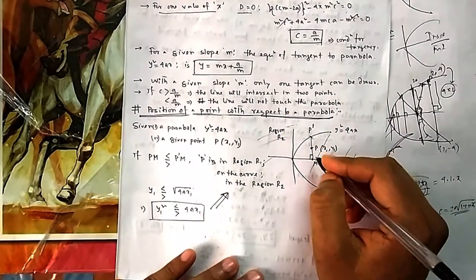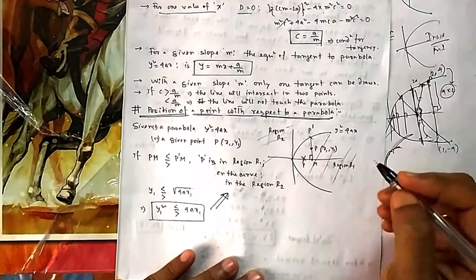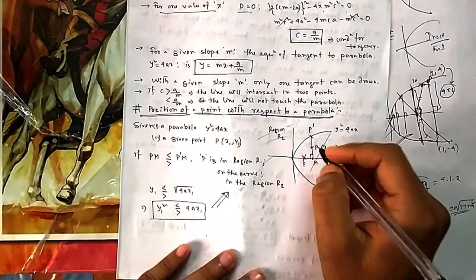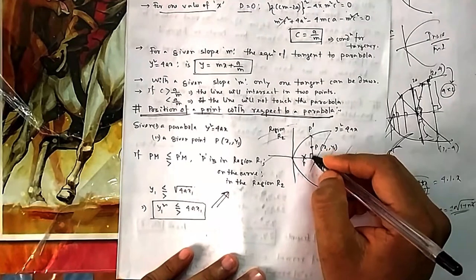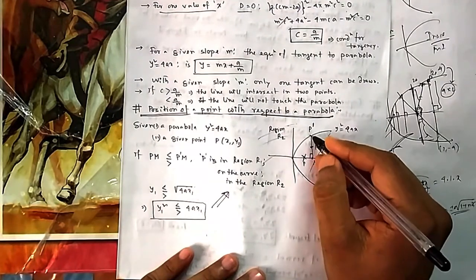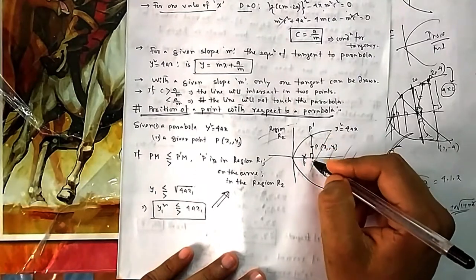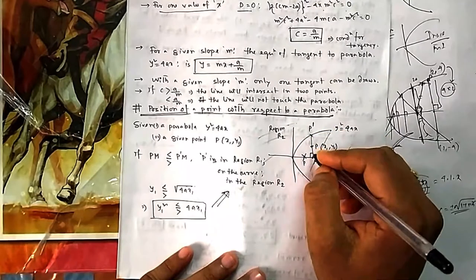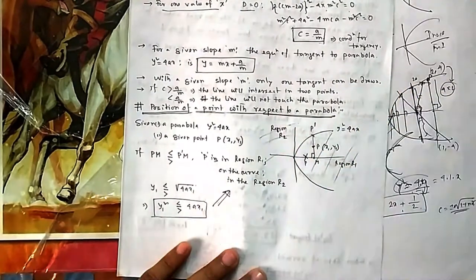If you have a point P, draw a perpendicular PM to the axis. Suppose the focus is here. You draw PM, and also draw a line where it cuts the parabola at P'. If PM is less than P'M, then the point is in Region 1. If it is equal, the point is on the parabola. If it is greater, the point is outside.